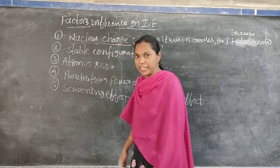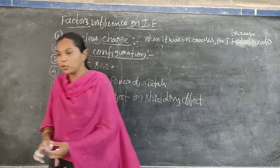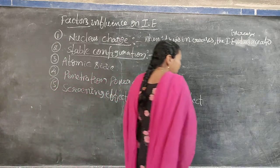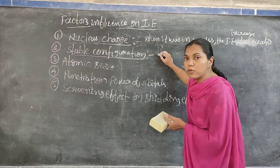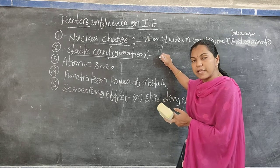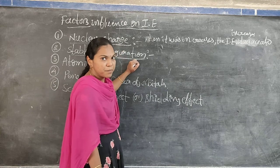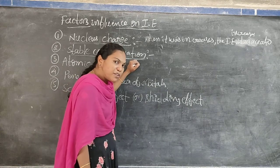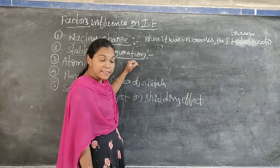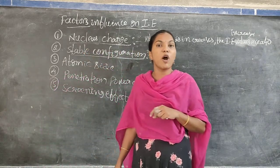The second factor is stable configuration. According to IUPAC rules, some elements which are half-filled or fully filled in their suitable orbitals are more stable compared to other atoms. For example: s orbital — stable with 2 or 1 electron; p orbital — stable with 6 or 3 electrons; d orbital — stable with 10 or 5; f orbital — stable with 14 or 7.